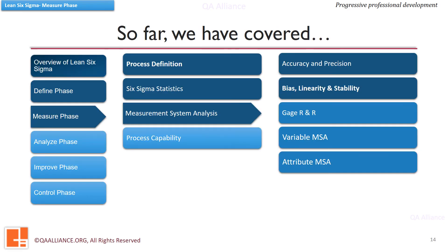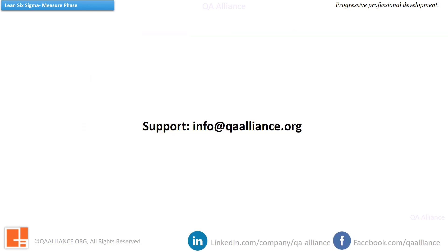We learnt the accuracy part of measurement system analysis and understood how we can analyze bias, linearity, and stability in the measurement system. Next lesson is on precision studies and we'll discuss gauge repeatability and reproducibility. Here we come to an end to this lesson — should you need any support, feel free to contact us.